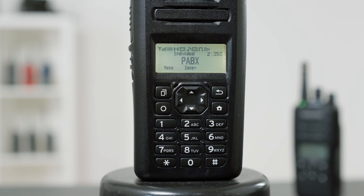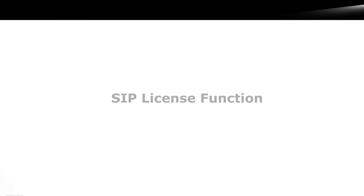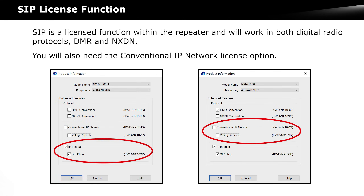You have successfully installed and executed the Asterisk open source PBX, and installed a set of sample sounds and configuration files to help you get started. SIP is a licensed function within the repeater and will work in both digital radio protocols, DMR and NXDN. You will also need the conventional IP network license option.